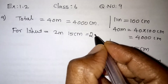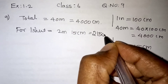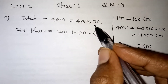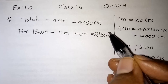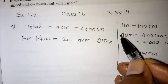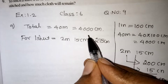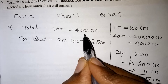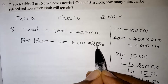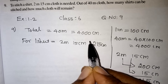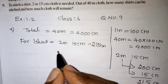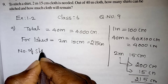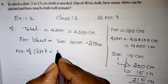So for one shirt the cloth requirement is 215 centimetres. Our question asks: how many shirts can be stitched out of this cloth, and what cloth will remain? They are asking how many times 215 centimetres can be measured in 4000 centimetres.